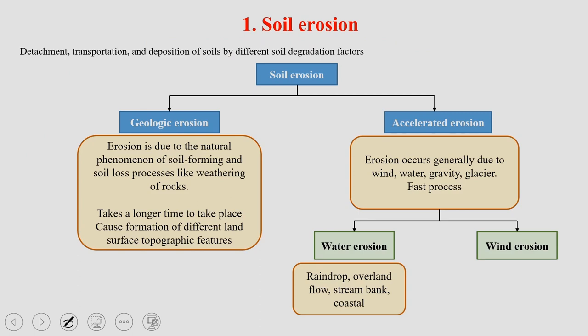Soil erosion is one of the major concerns for today's natural resource managers, agricultural scientists, soil scientists, and geologists. Soil erosion is basically the detachment, transportation, and deposition of soils by different soil degradation factors. There are two main types: geological erosion and accelerated erosion. Geological erosion takes place due to natural phenomena of soil-forming and loss processes, such as the weathering of rocks. This process takes a longer time and its formation of different land surfaces or topographic features is also very time-consuming.